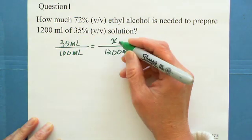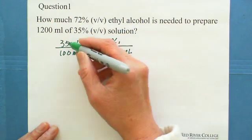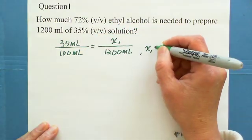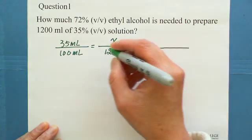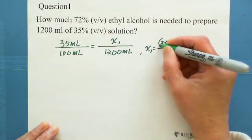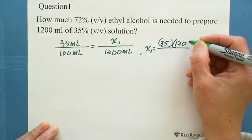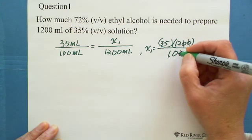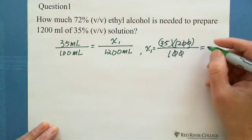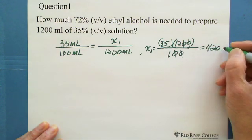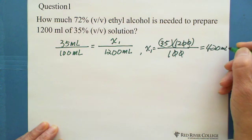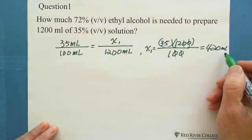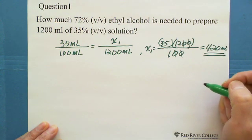In 1200 milliliters, how many milliliters solute? Cross multiplication. We got x1 equals 35 multiplied by 1200, the bottom is divided by 100. We can cancel the zeros. 35 multiplied by 12, we got 420 milliliters. That means in 1200 milliliters solution, we need 420 milliliters solute.